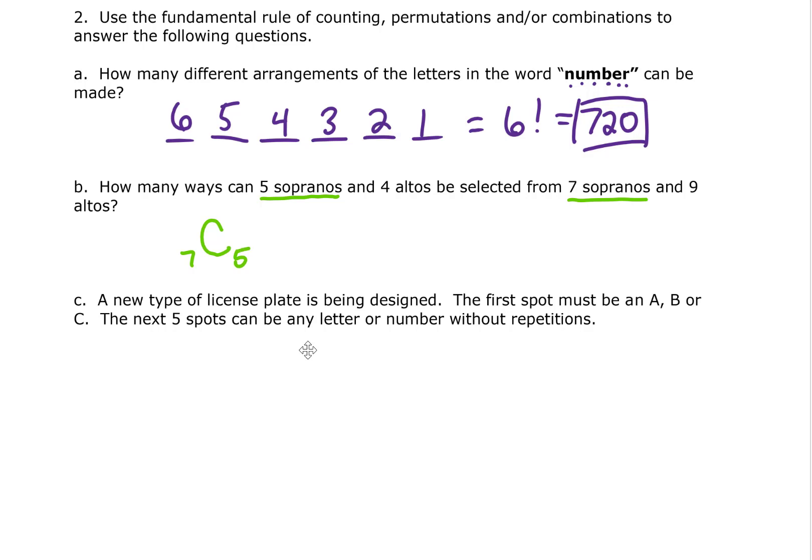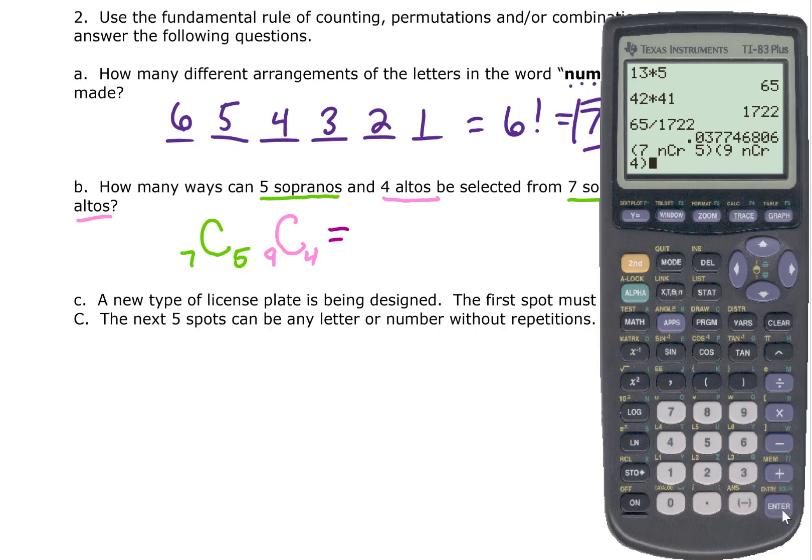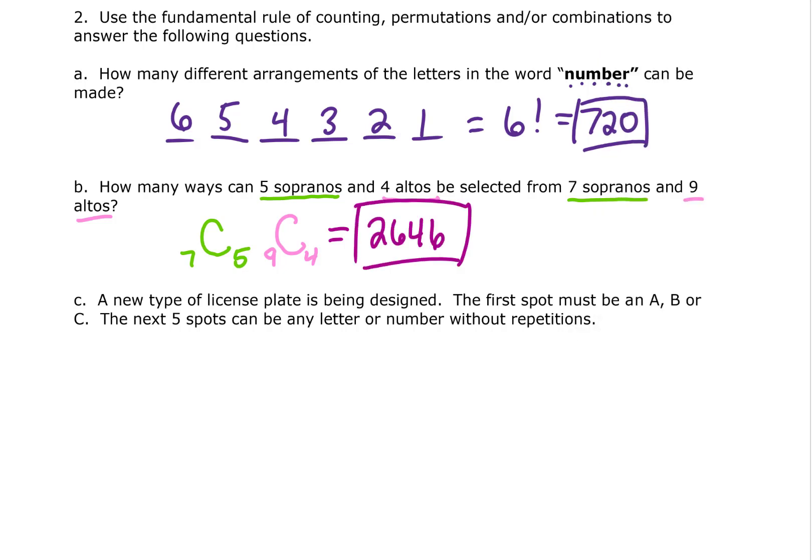I want to know about the altos. We are selecting four of them from a pool of nine. Again we're going to use a combination. We're choosing from a pool of nine a total of four altos. Let's plug this into our calculator. I'll do seven choose five first. I'll put that in parentheses. I'm going to multiply that by nine choose four. I'm getting that there are 2646 ways to do this.